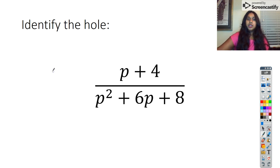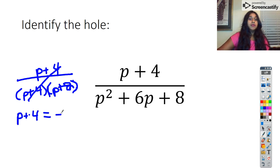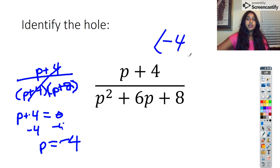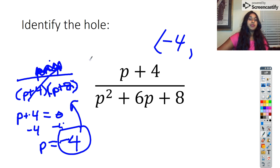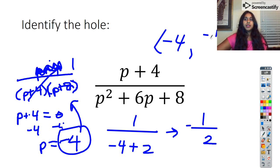Here we have another find-the-hole. I show the factors we put on the screen last time and look for what I can cancel. I cancel P plus four, so I set that equal to zero, giving P equals negative four. That's the beginning of my coordinate point. I take negative four and plug it back in. What was left on top was the number 1, so that becomes one over negative four plus two, which is one over negative two, or negative one half. So I have a hole at negative four comma negative one half.